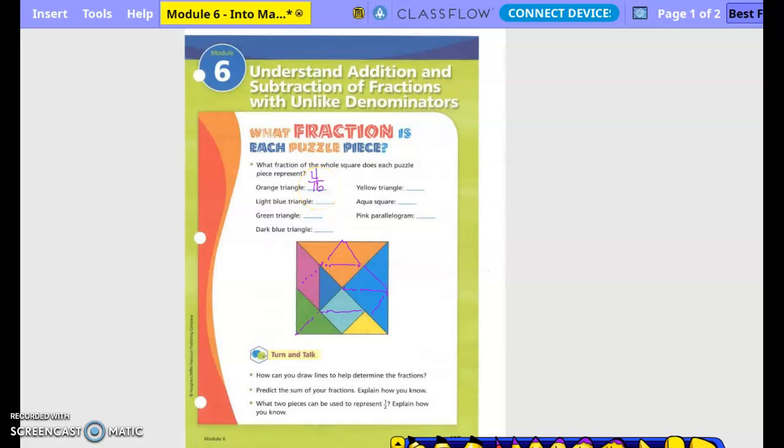Okay. How many light blue triangles? Two. So 2/16. How many green triangles? Two. So 2/16. How many dark blue triangles? Four. There's four here and one here. So 5/16. And then how many yellow triangles? 1/16. How many on the aqua color? Two. Six.